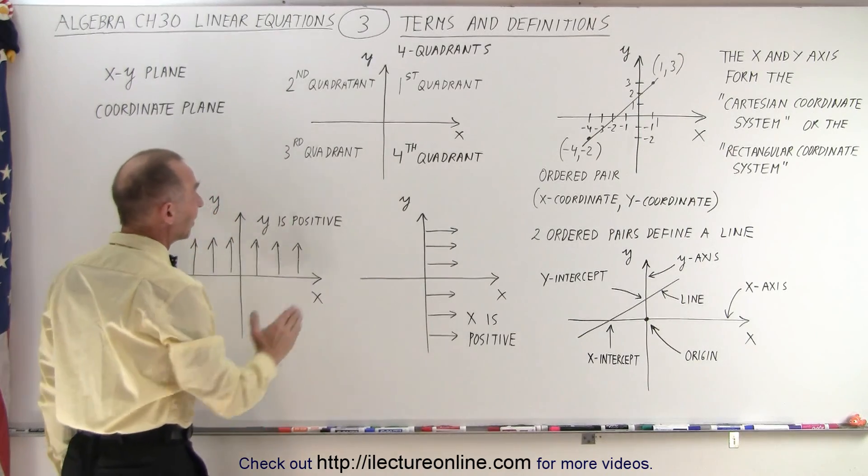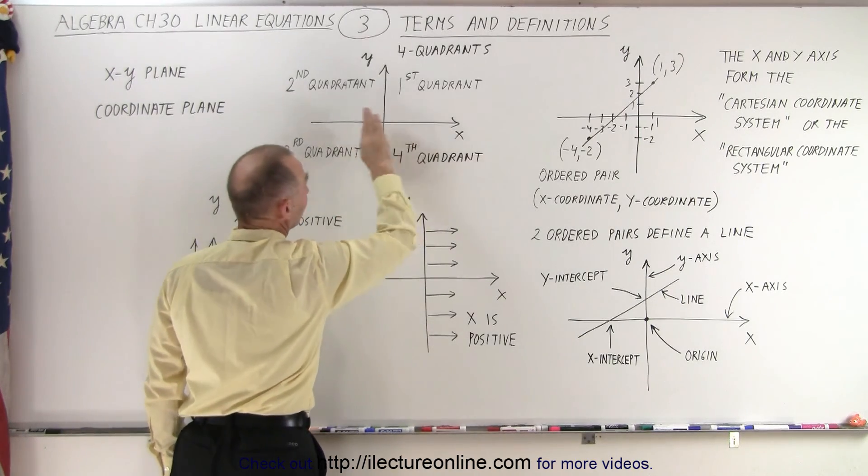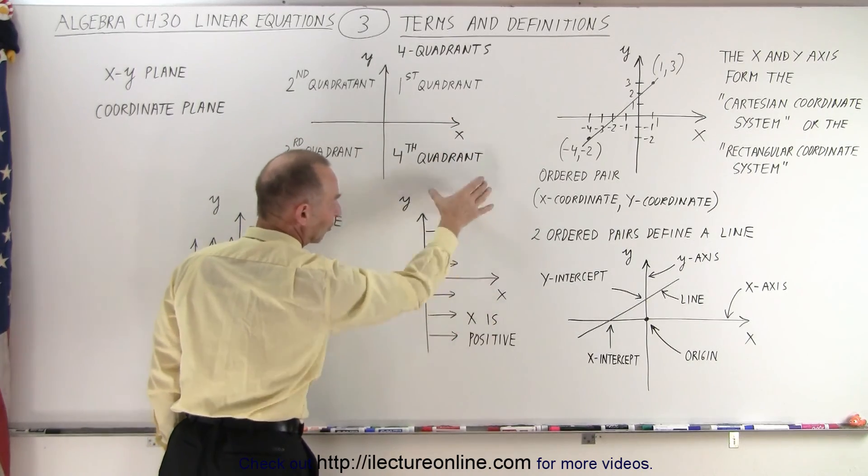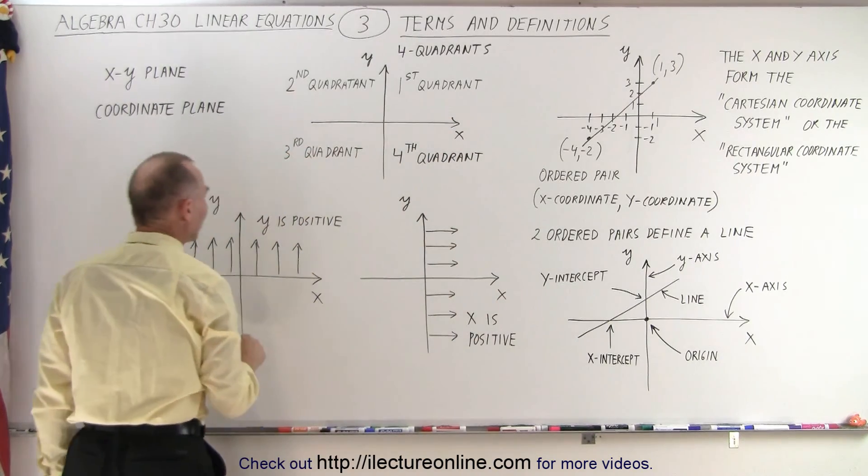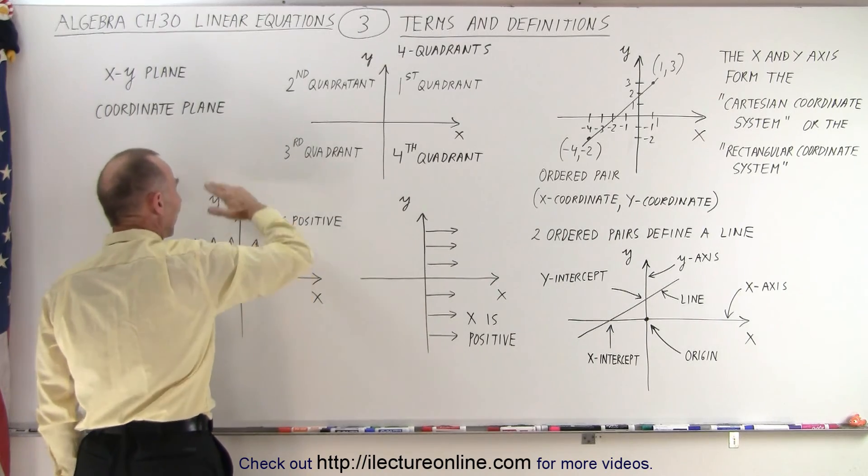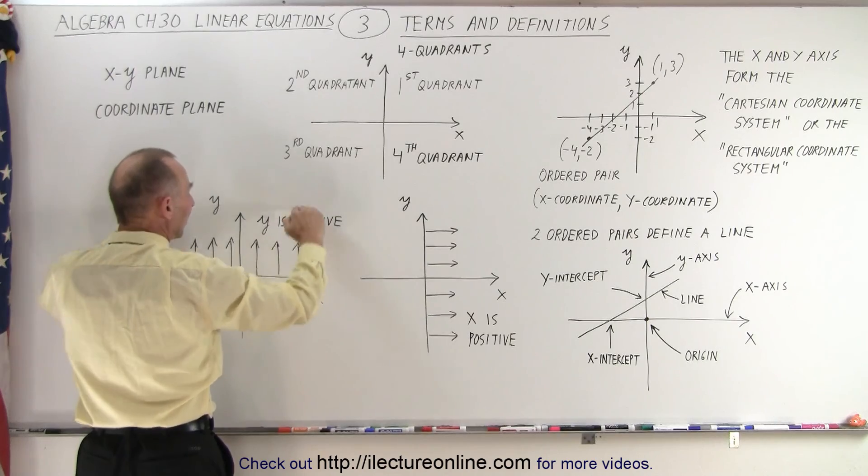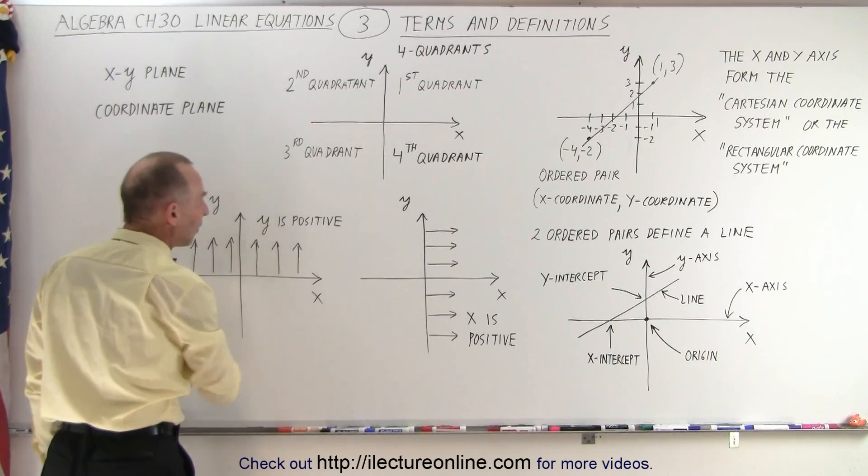Now notice that in the first and the fourth quadrant, all the values to the right of the y-axis, that's where x is going to be positive. If we look at the first and the second quadrant, all the values above the x-axis, that gives us all the values where y is positive.